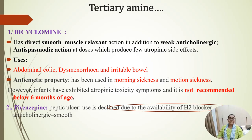Dicyclomine has direct smooth muscle relaxation action in addition to weak anticholinergic antispasmodic action. Uses include abdominal colic, dysmenorrhea, and irritable bowel syndrome. It has also been used in morning sickness and motion sickness. In infants, it has exhibited atropine toxicity symptoms and is not recommended in pediatric patients below six months.